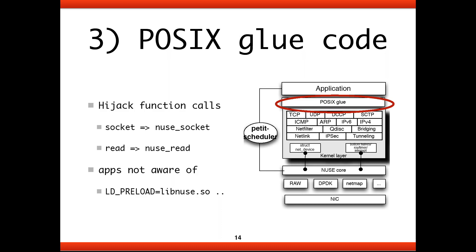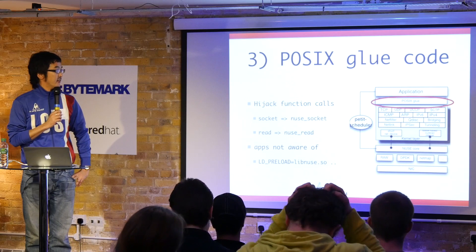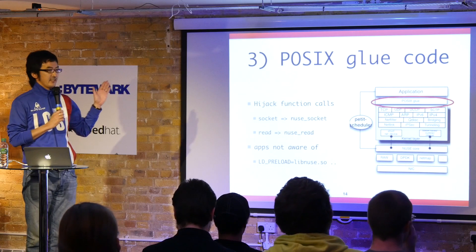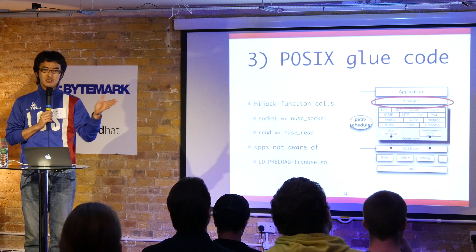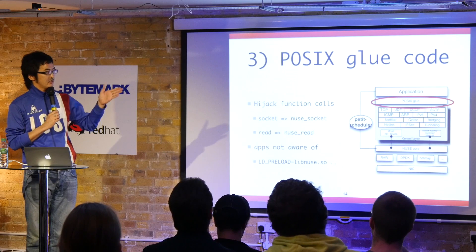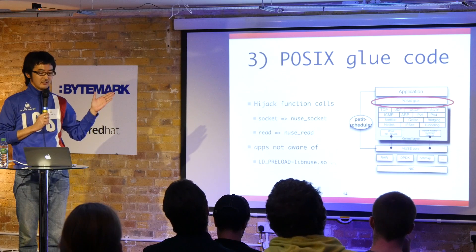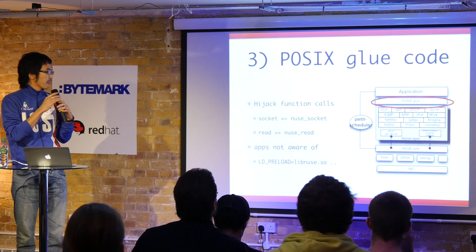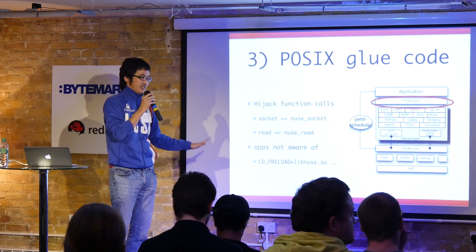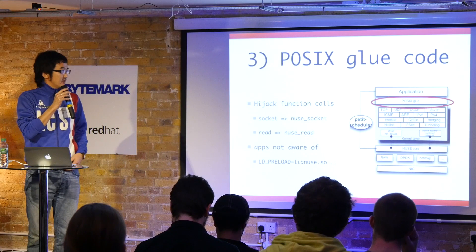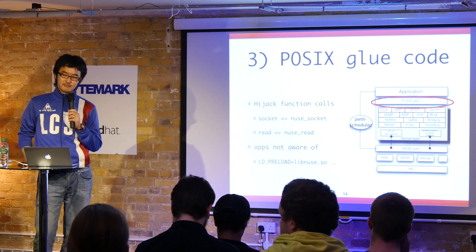The third component is the POSIX glue code — we call it POSIX glue code — which is a kind of function hijacking code similar to what the LAMP kernel defines. This glue code provides indirection: when an application calls a system call, this library hijacks it and redirects to our user-space code instead of the host OS kernel. The application is unaware of this, achieved by using injection via the LD_PRELOAD environment variable, so we can use existing applications easily with this technique.